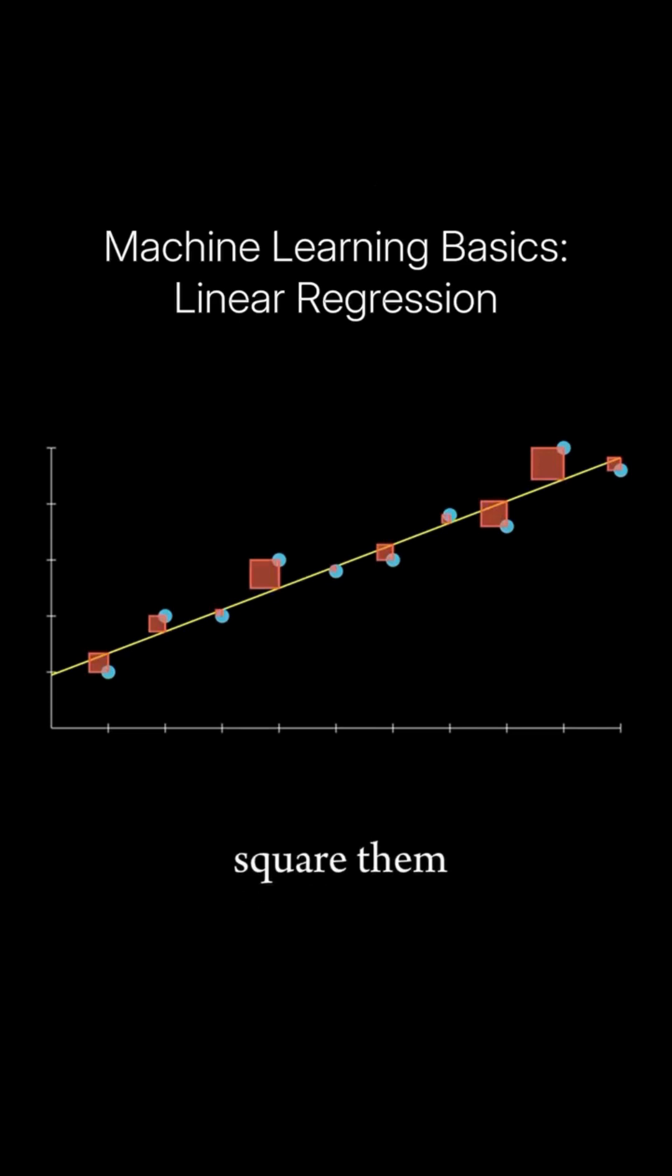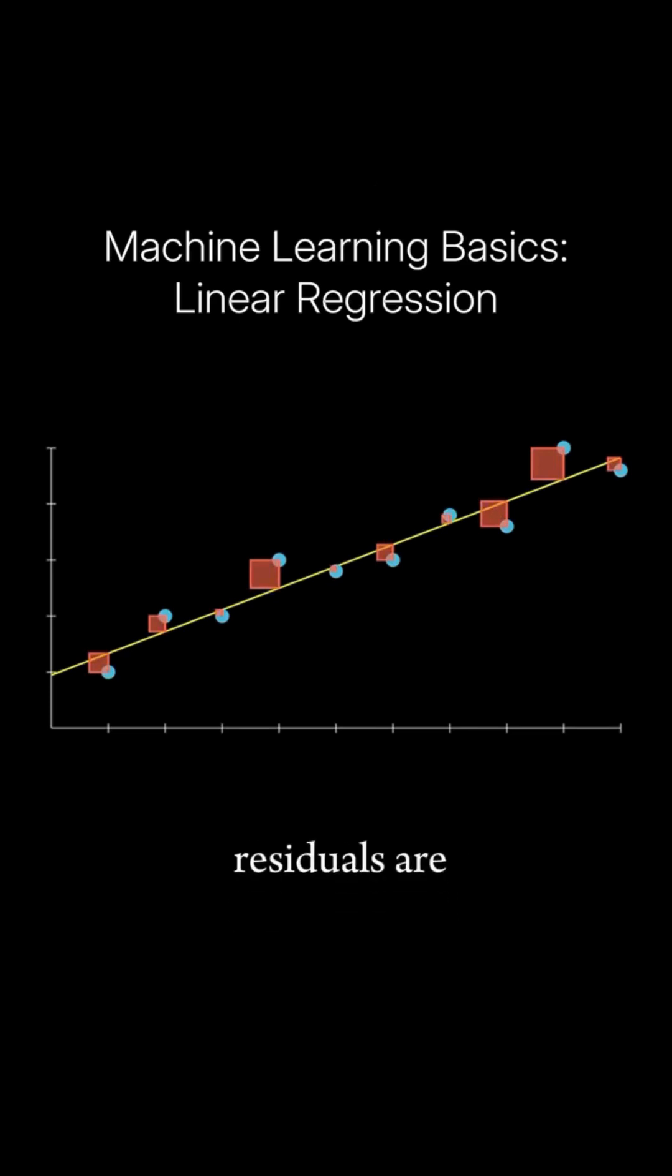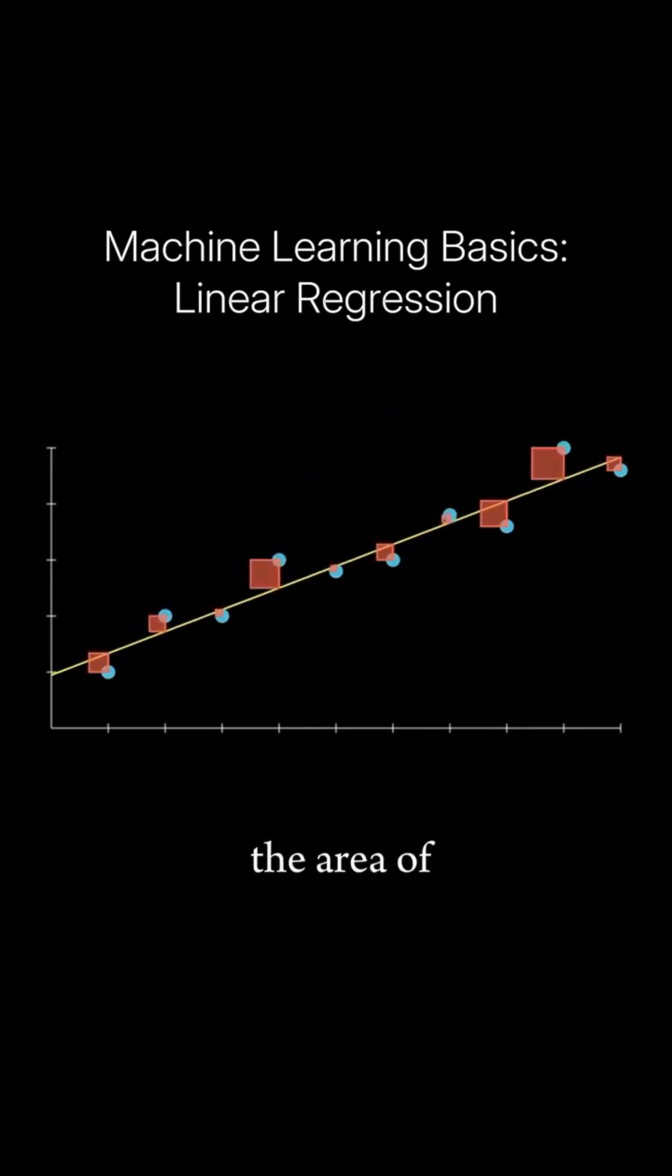Take each of these residuals and square them. These are the squared errors and notice that the larger the residuals are, the more amplified the area of the squares are.